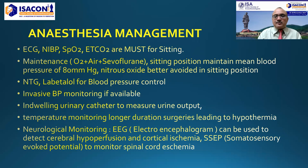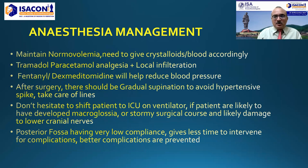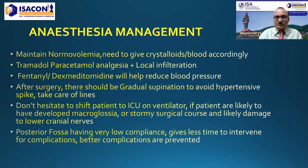Somatosensory evoked potentials (SSEP) can be used to monitor spinal cord ischemia. Intraoperatively, normal volemia must be maintained; if there is blood loss, blood and crystalloids should be given accordingly. Analgesia can be provided with tramadol, paracetamol, and local infiltration. Fentanyl and dexmedetomidine can also be used and will help reduce blood pressure. After surgery, there should be gradual supination from sitting position to avoid sudden hypertension, taking care that lines are not stretched or pulled off. Patients should be shifted to ICU or ventilated if there is any risk of macroglossia, stormy surgical course, or likely damage to lower cranial nerves.